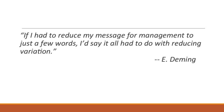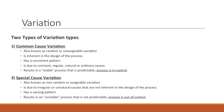W. Edwards Deming, one of the fathers of quality improvement, said if I had to reduce my message for management to just a few words, I'd say it all had to do with reducing variation. There are two types of variation: common cause variation and special cause variation. We're going to talk about these one at a time.